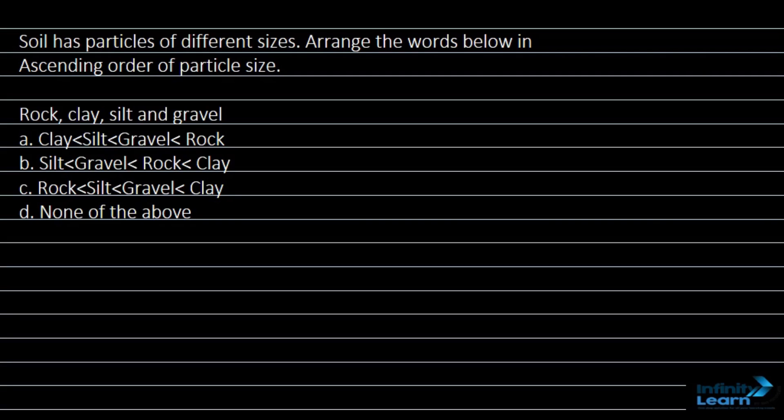Hello students, I am the teacher to the question and question says, soil has particles of different sizes. Arrange the words below in ascending order of particle size. We have four words given: rock, clay, silt and gravel, and we have to arrange them in ascending order of particle size.